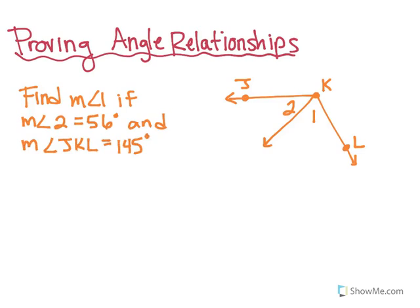In this video we're going to talk about how to prove angle relationships. We're first going to check this out by looking at an example. It gives us a picture and some information. It says to find the measure of angle 1 if the measure of angle 2 is 56 degrees and the measure of angle JKL is equal to 145 degrees. So we know for a fact that the entire angle, this guy right here, is worth 145 degrees.